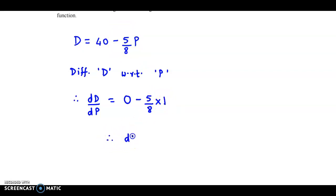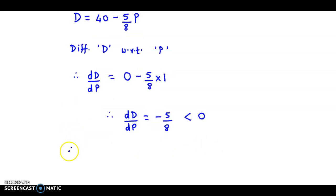Therefore derivative of D with respect to P is minus 5 by 8 which is less than 0. And we know if first order derivative is negative, therefore we can say the given function is decreasing. So the given function is a decreasing function.